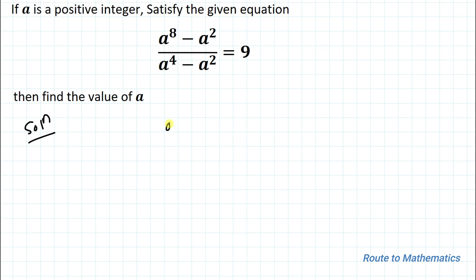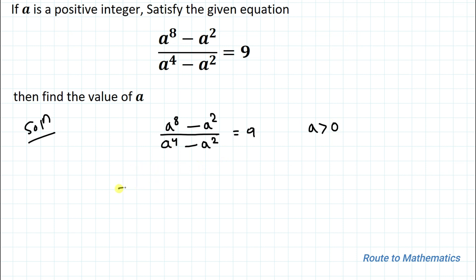We have given a⁸ minus a² divided by a⁴ minus a² equals 9, and a is a positive integer, which means a must be greater than 0. In the next step, I will take a² common from the numerator and denominator as well.